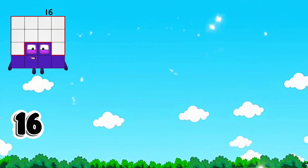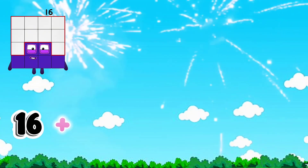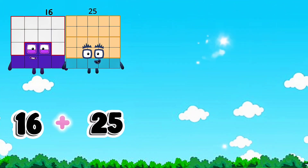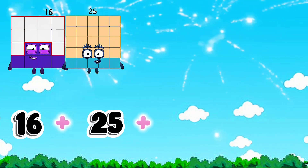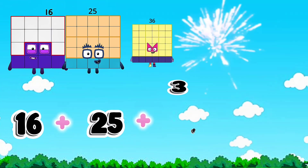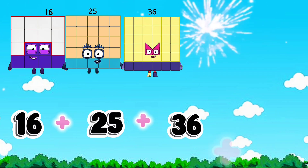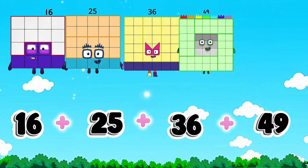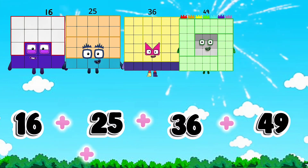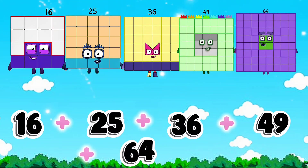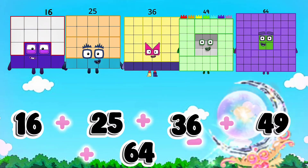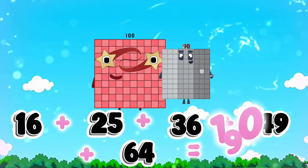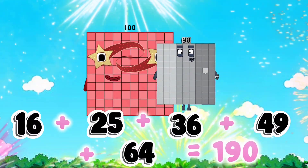16 plus 25 plus 36 plus 49 plus 64 is equals to 190.